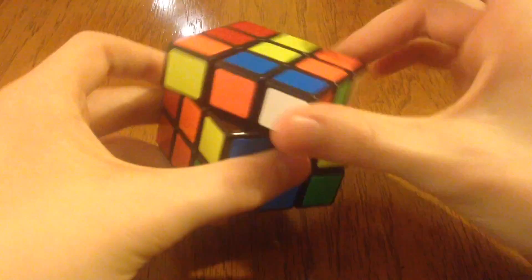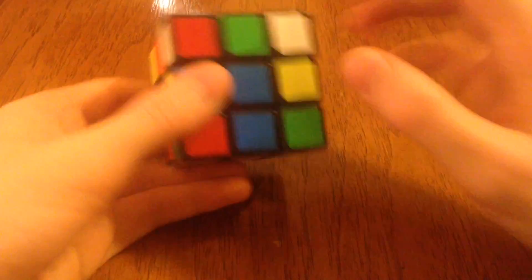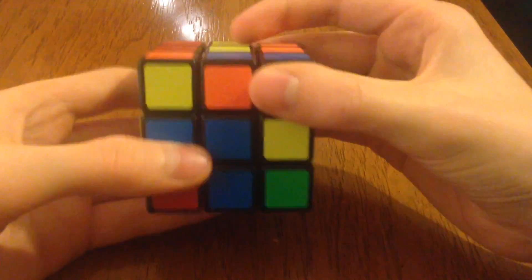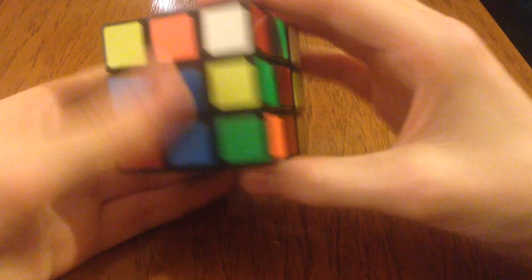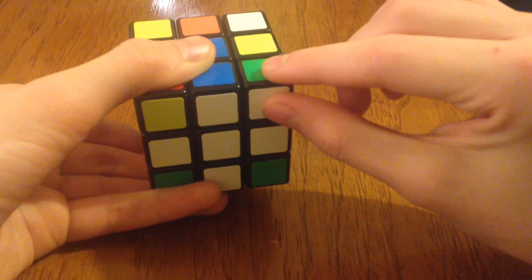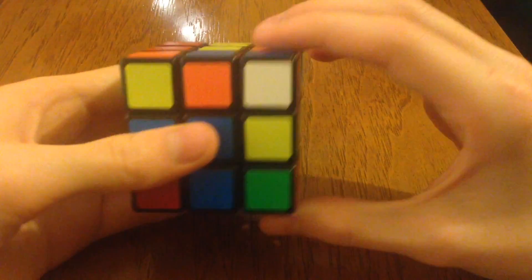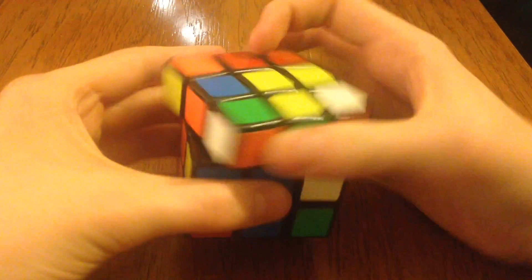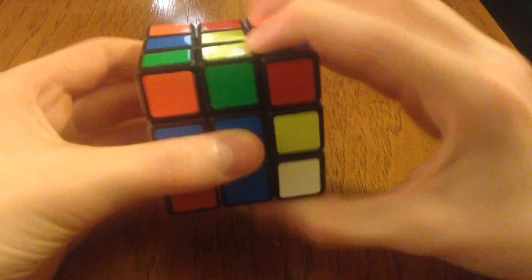If it was over here, we take it back over, right on top. And we hold it like this, with it on the right, and above that square. And we do R, U, R prime, U prime. So R, U, R prime, U prime.